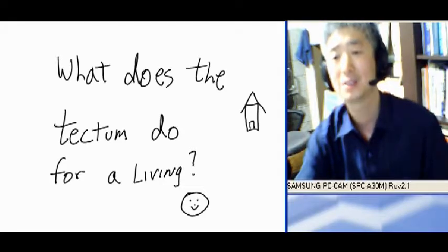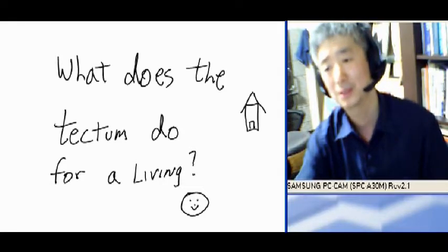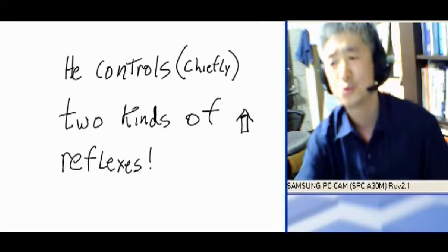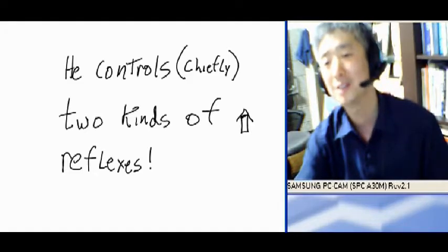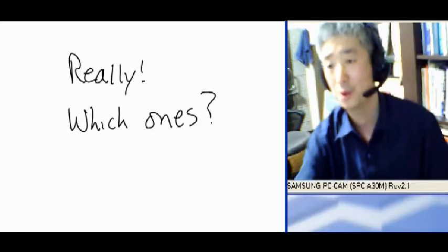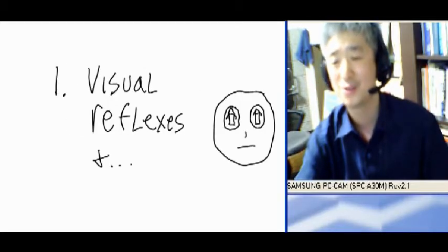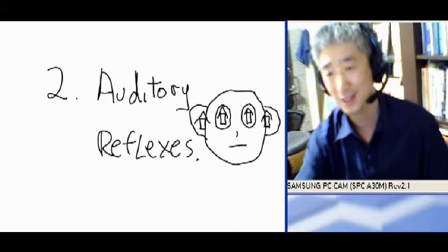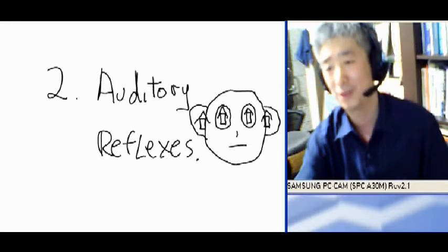What does the tectum do for a living? It controls, chiefly, two kinds of reflexes. Really? Which ones? Visual reflexes and auditory reflexes.